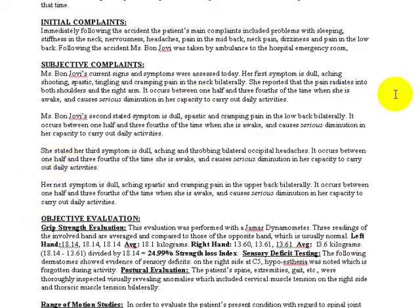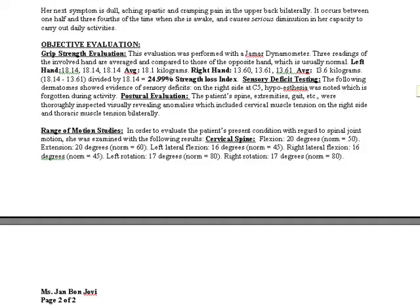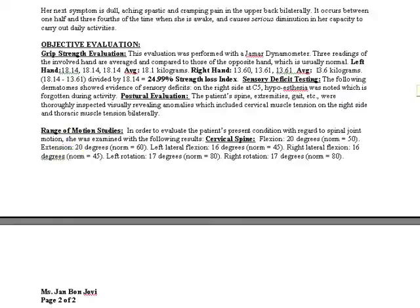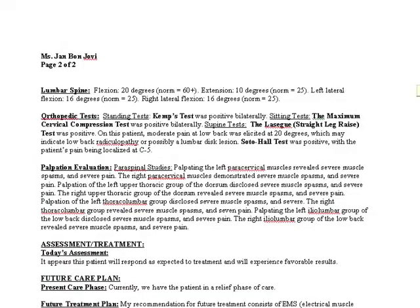Here's the fourth symptom. And then as you scroll down, here you have objective evaluation — grip strength and various things, postural, range of motion with the actual norms but what was found today. Scrolling down further, you have certain orthopedic tests done here, and palpation evaluation.